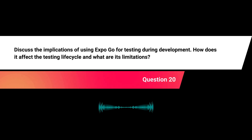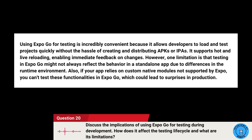Discuss the implications of using Expo Go for testing during development. How does it affect the testing lifecycle and what are its limitations? Using Expo Go for testing is incredibly convenient because it allows developers to load and test projects quickly without the hassle of creating and distributing APKs or IPAs. It supports hot and live reloading, enabling immediate feedback on changes. However, one limitation is that testing in Expo Go might not always reflect the behavior in a standalone app due to differences in the runtime environment. Also, if your app relies on custom native modules not supported by Expo, you can't test those functionalities in Expo Go, which could lead to surprises in production.